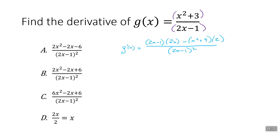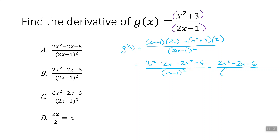Now we simplify the top to match one of the answer choices. Distribute the 2x: 2x times 2x is 4x squared, minus 2x. Distribute the 2 with the negative: we get minus 2x squared and minus 6. Our bottom stays the same — the bottom basically stays the same every time. So 4x squared minus 2x squared gives us 2x squared, minus 2x, minus 6, all over 2x minus 1 squared. We could factor out a 2 if we wanted to, but that's about it. And that looks exactly like answer choice A.